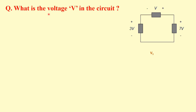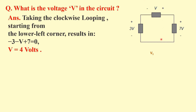Here is a numerical question: in this loop, find the voltage V in the circuit. We have 3 volts and 7 volts, and we need to find V. Taking the loop in the clockwise direction: minus 3 minus V plus 7 equals zero. Therefore V equals 4 volts.